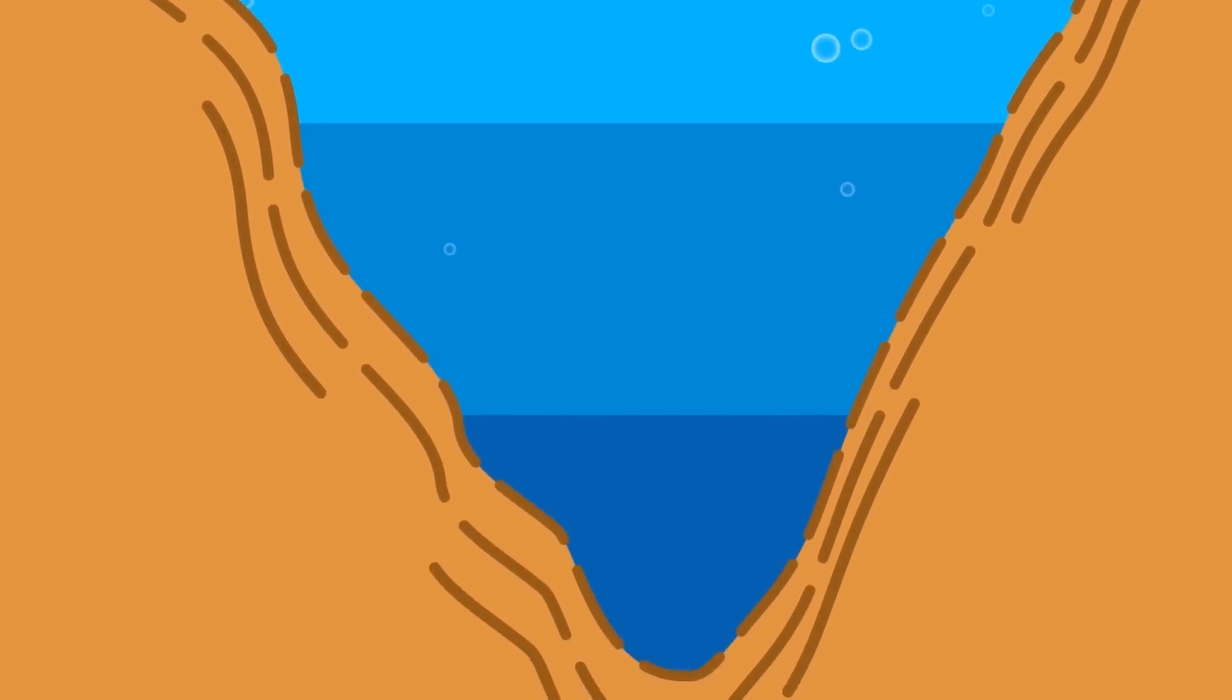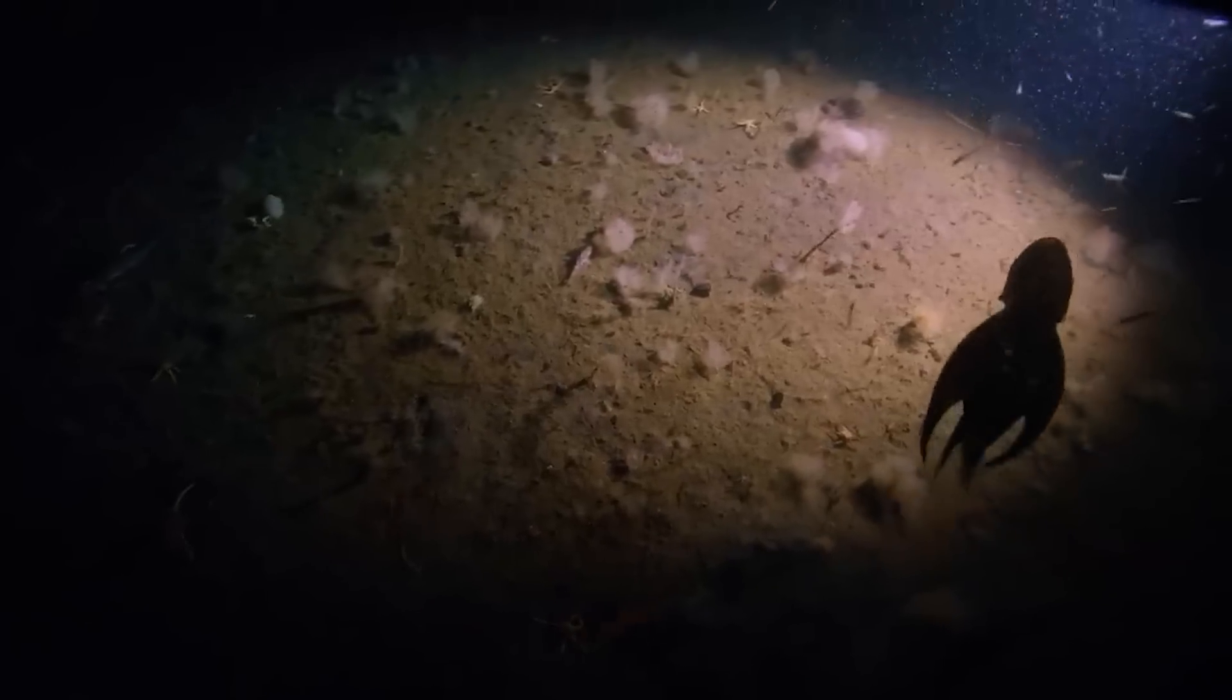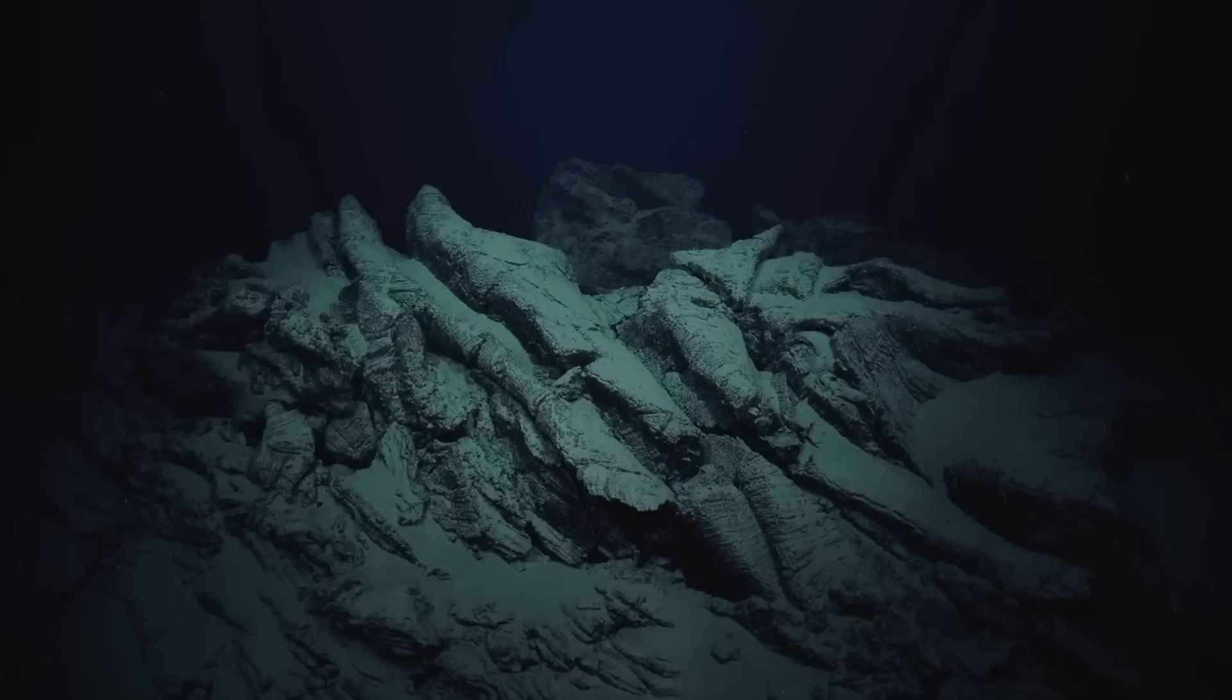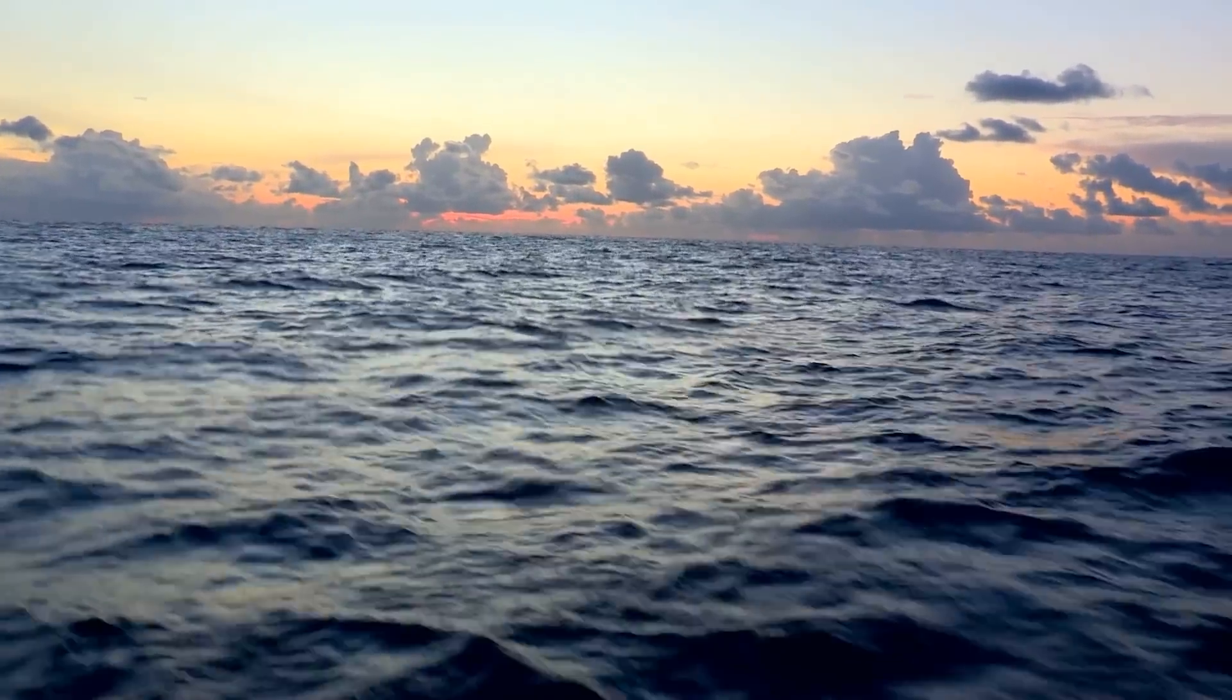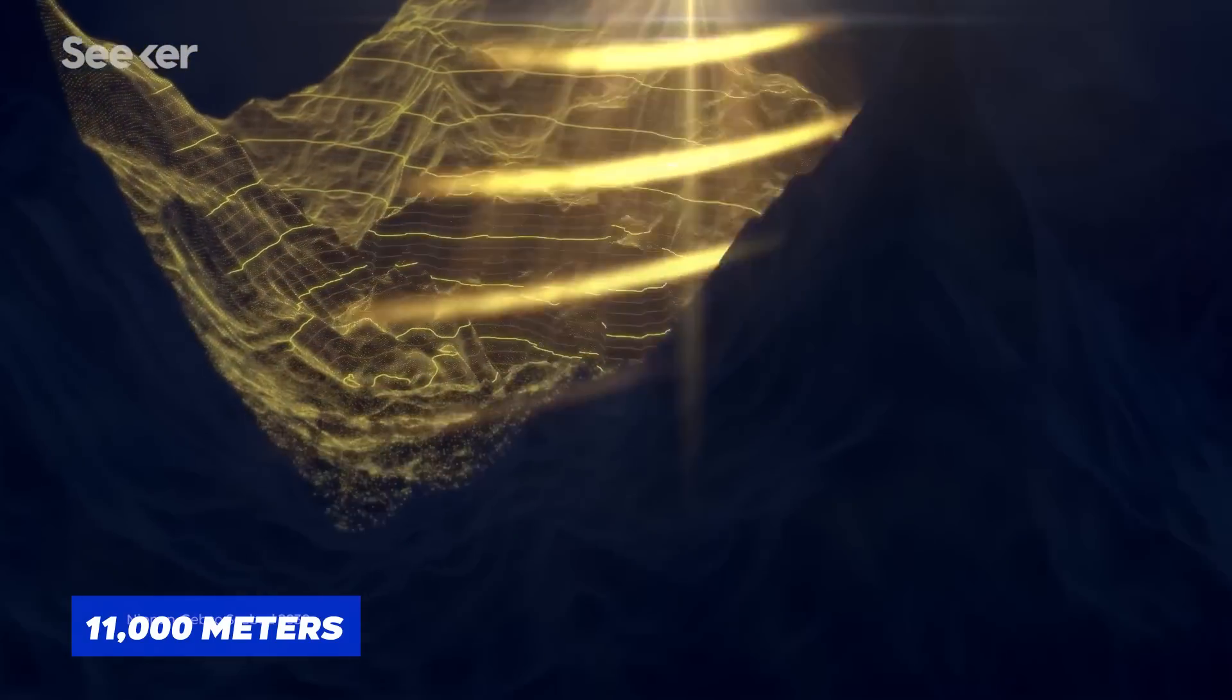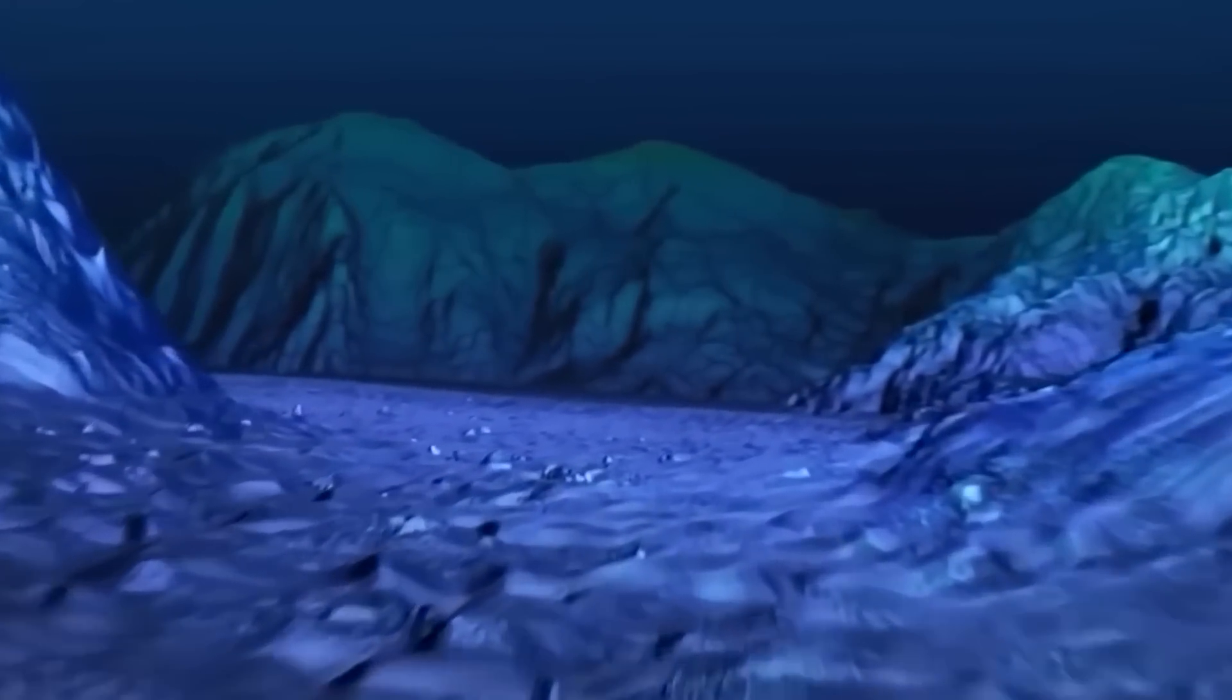To understand this zone, we first have to comprehend the vastness of the ocean. Most of the ocean floor is relatively shallow, ranging between 4,000 to 6,000 meters deep, which is around 13,000 to 20,000 feet. And that's deep, right? But hold on, because the ocean has even deeper secrets to reveal. Some parts of the ocean floor can plunge to astonishing depths of 11,000 meters, or approximately 36,000 feet beneath the surface.